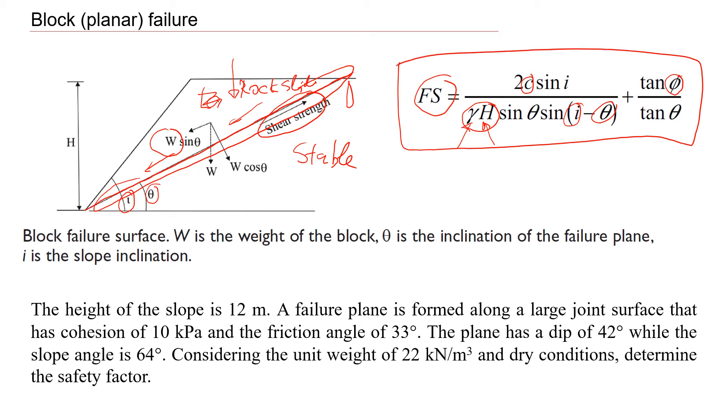This is the formula that we use. And this text of the problem is something that you can get during site investigation. You can measure the height of the slope. It's 12 meters. Then we know that there is a potential failure plane. And we know that the strength of the rock mass material along this failure plane has very small cohesion. Basically, it's close to zero. And it still has some friction angle, about 33 degrees.